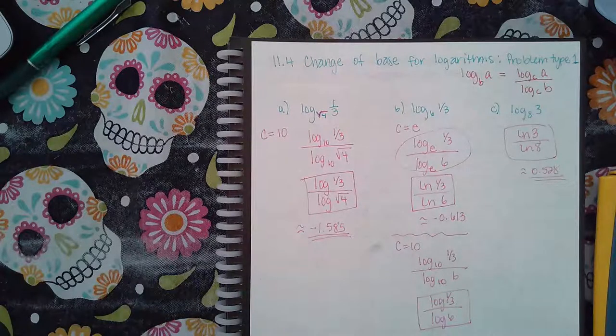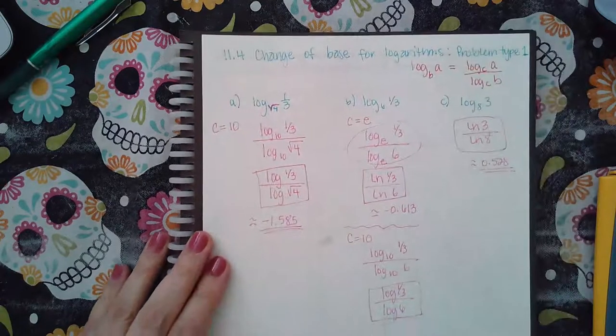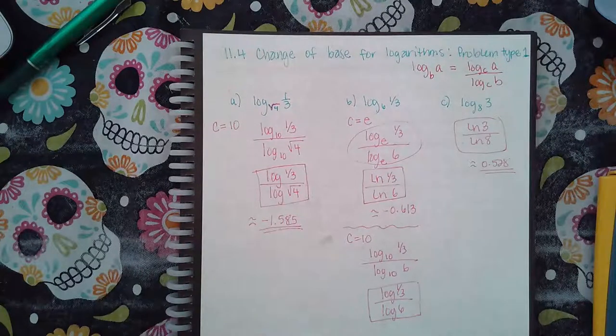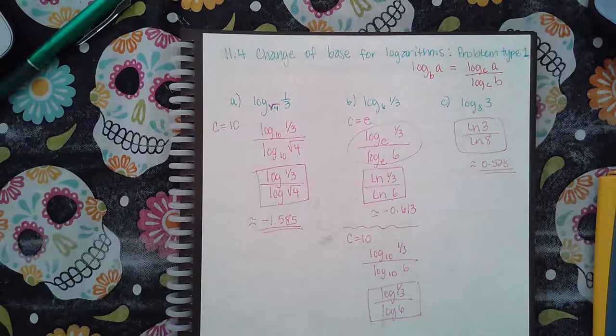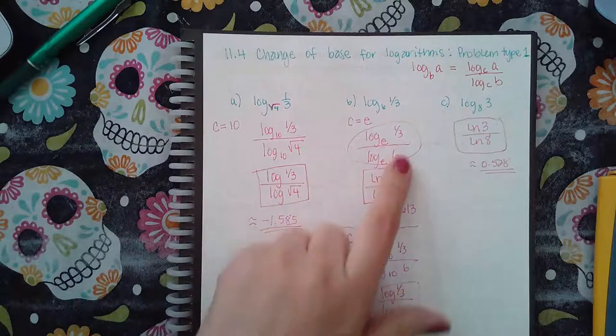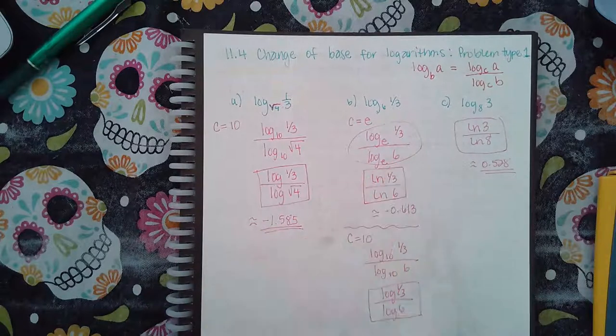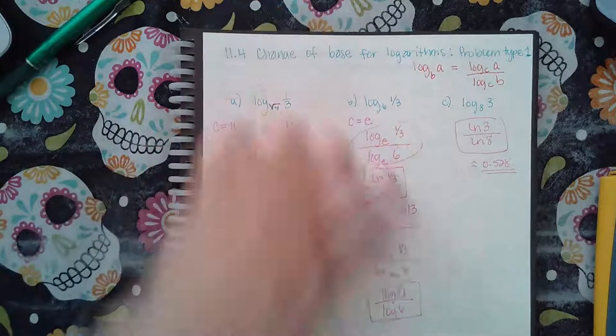Now for the second example, I chose to use log base e, the natural number, so I got log base e of one third, log base e of six. Remember, argument goes on top, base goes on bottom.